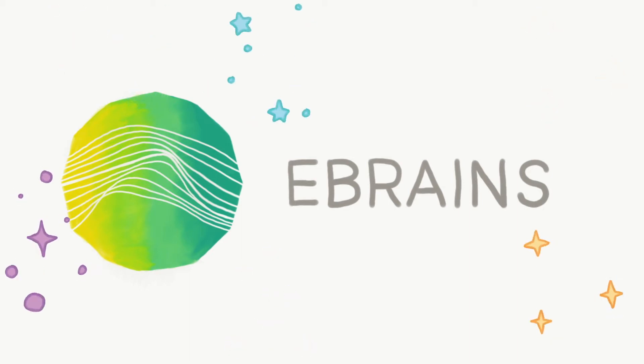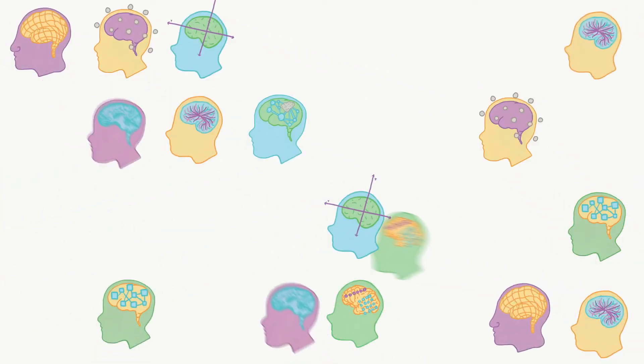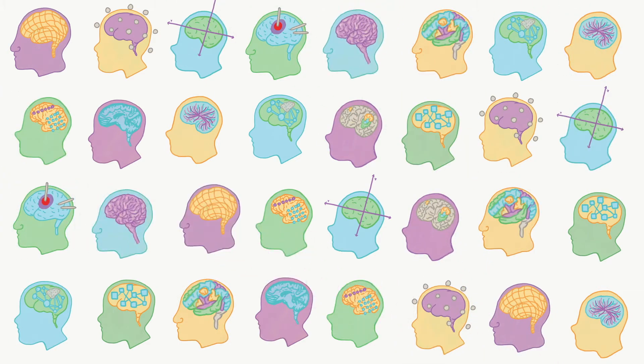The Virtual Brain on eBrains allows users to construct, simulate, and analyze personalized brain network models. Its powerful features can be used from your local computer, making computationally expensive neurological research possible from the comfort of your web browser.